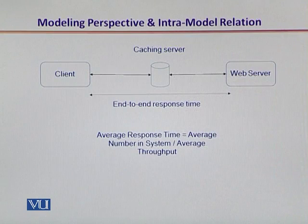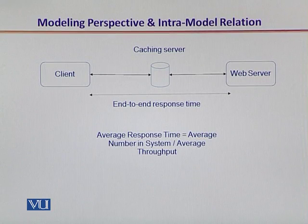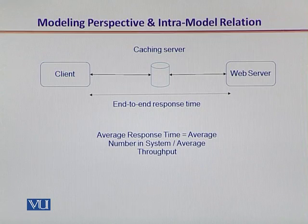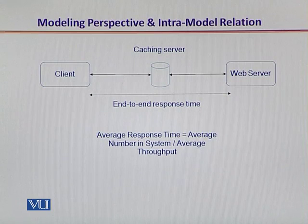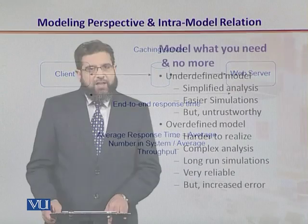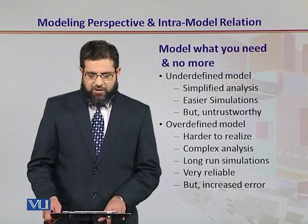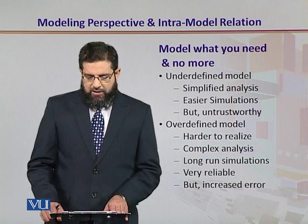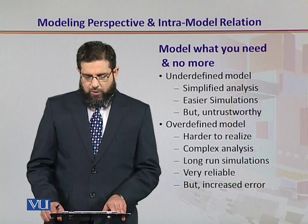Looking at the overall picture, we have defined a single client, a web server, and a caching server. We are not interested in intermediate latencies — we are only interested in end-to-end response time. We want to determine the average response time, which is given as a ratio of the average number of requests in the caching server and the capacity of the caching server in terms of throughput.